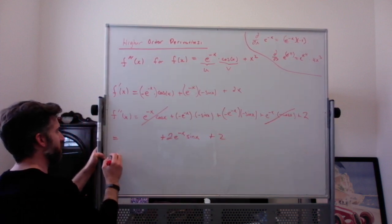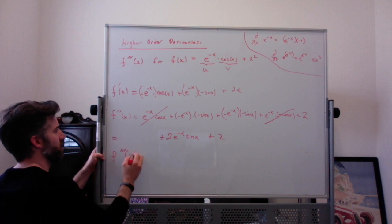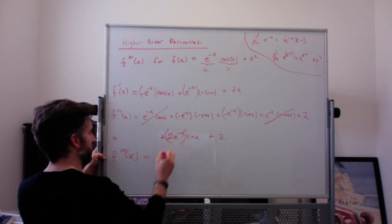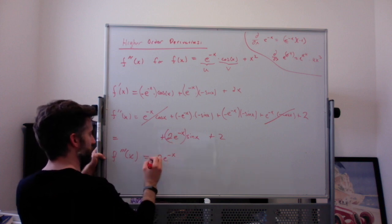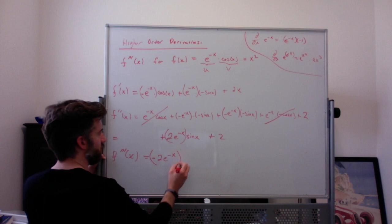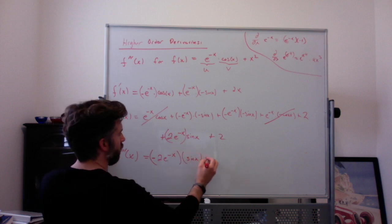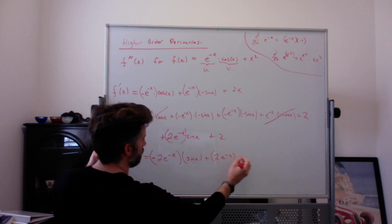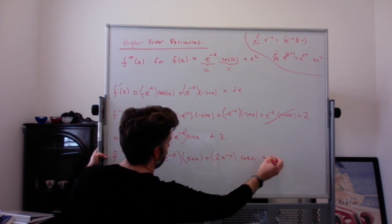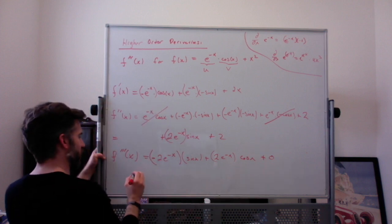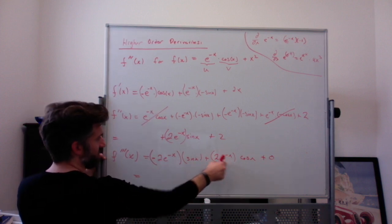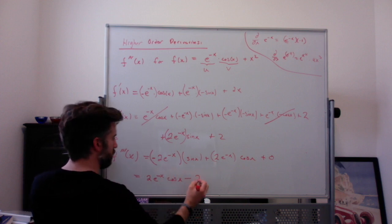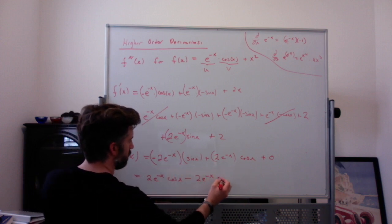Finally, we take the third derivative. Treating 2e to the negative x sine of x as one product: the derivative of 2e to the negative x is 2e to the negative x times negative 1, times sine left alone, plus 2e to the negative x times the derivative of sine, which is cosine, plus 0. Writing the positive term first, the answer is 2e to the negative x cosine of x minus 2e to the negative x times sine of x.